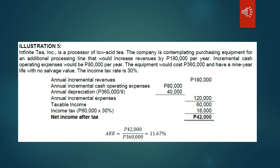So $42,000 ÷ $360,000 = 11.67%. That is how you solve the Accounting Rate of Return. We solve the incremental revenues, deduct the incremental expenses, get the taxable income, deduct the income tax at 30%, and divide the net income by the cost of the equipment. The ARR here is 11.67%.